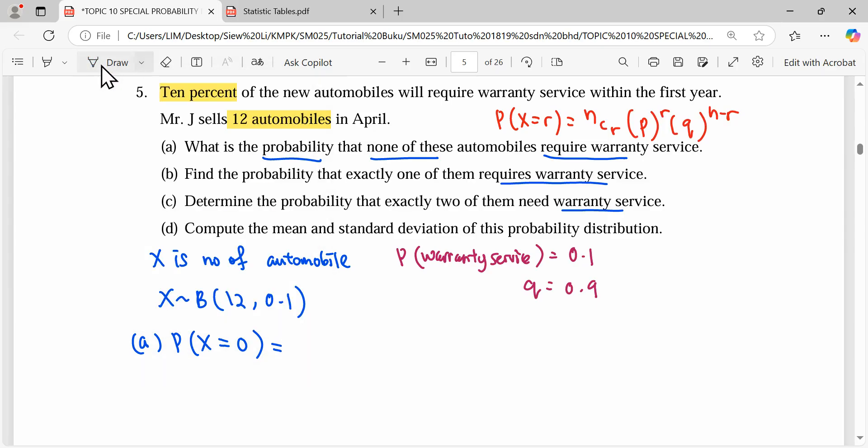So for this case, n is 12, r is 0, p is 0.1 power 0, q is 0.9 power 12. This gives our answer with more than three significant figures.